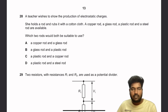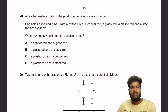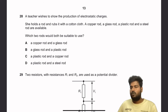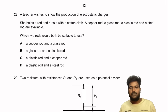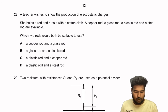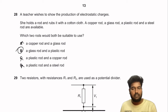Question 28: A teacher demonstrates electrostatic charges by rubbing a rod with a cotton cloth. Available rods: copper, glass, plastic, and steel. Conductors like copper and steel allow transferred charge to distribute throughout the metal instantly, so charge won't stay localized. To demonstrate electrostatic charge, you need insulators. Glass rod and plastic rod are both suitable choices.